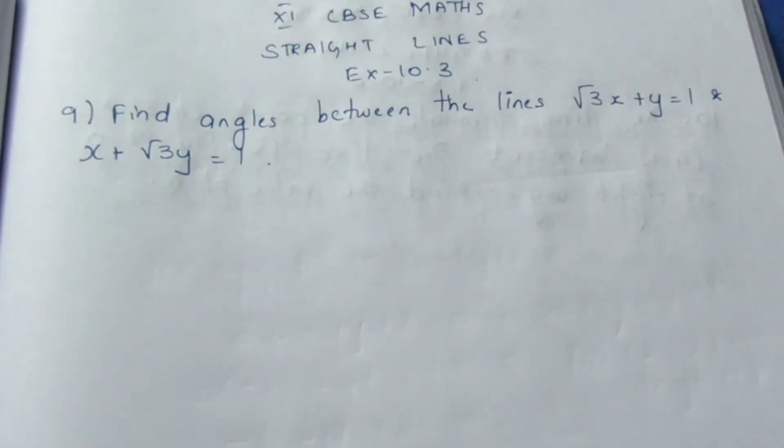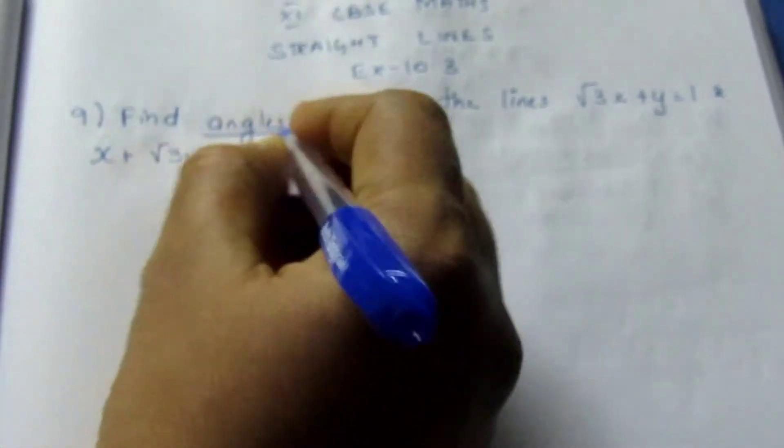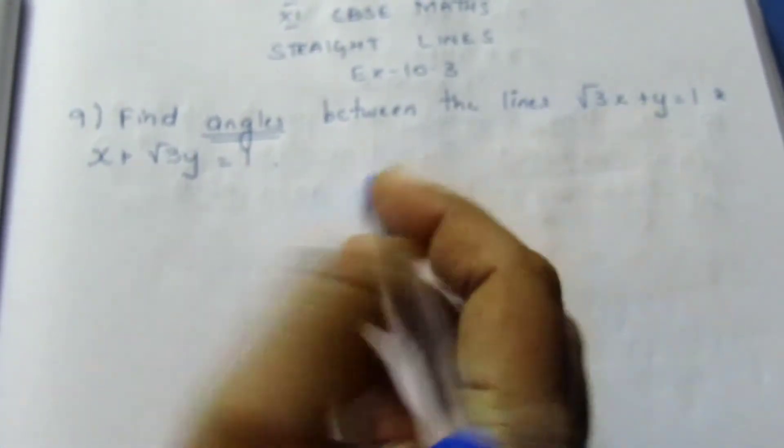Let's see the question. Find angles between the lines √3x + y = 1 and x + √3y = 1. We need to find the angles between the two equations.